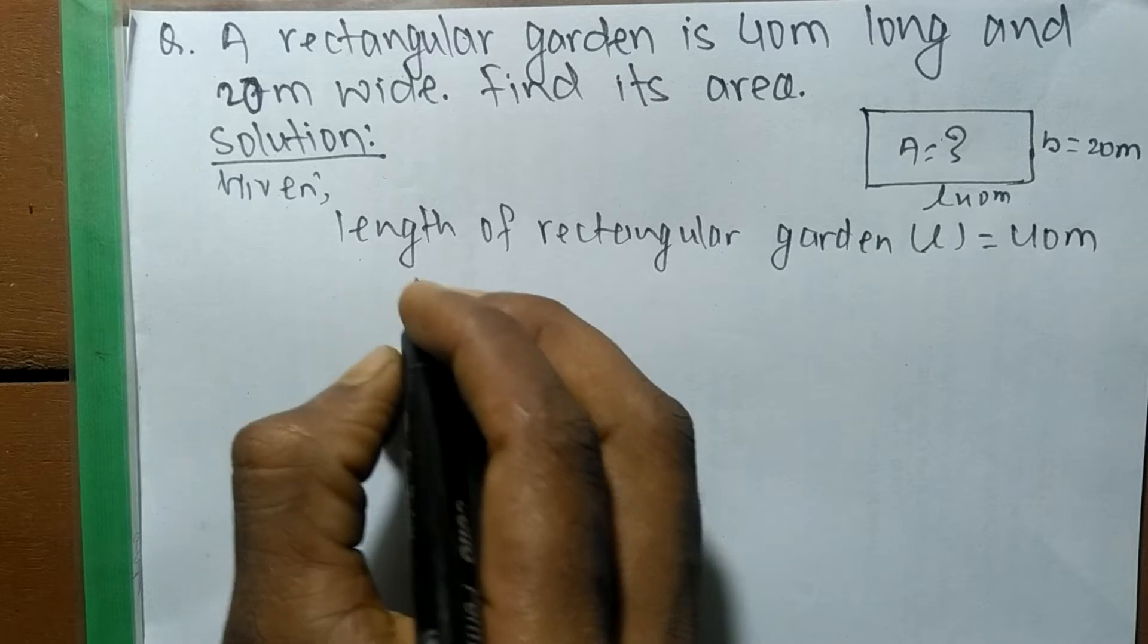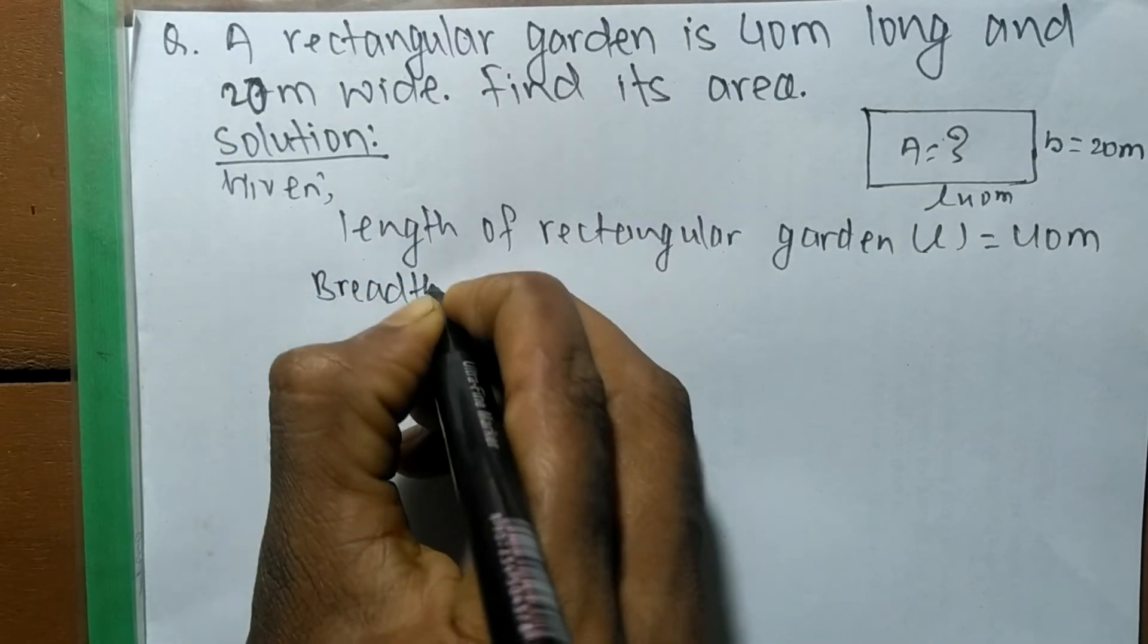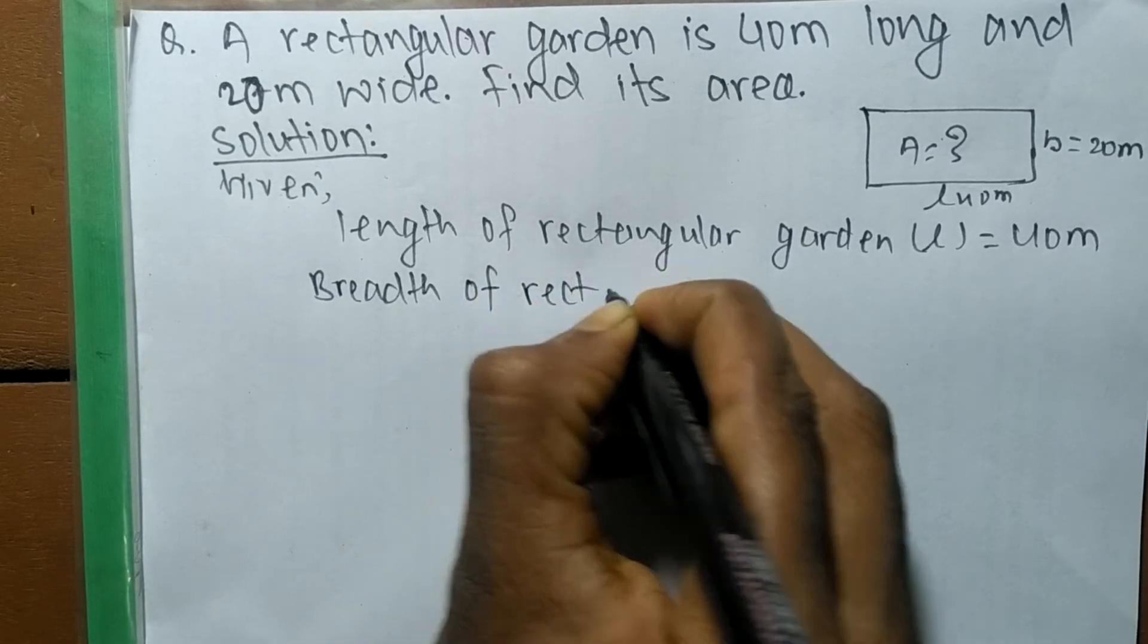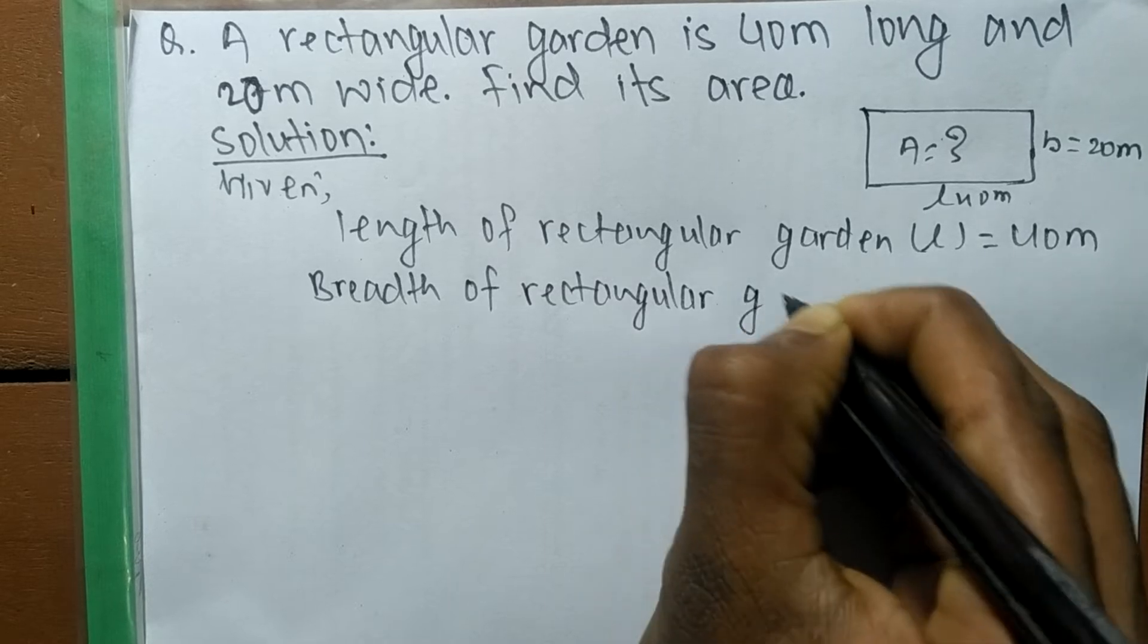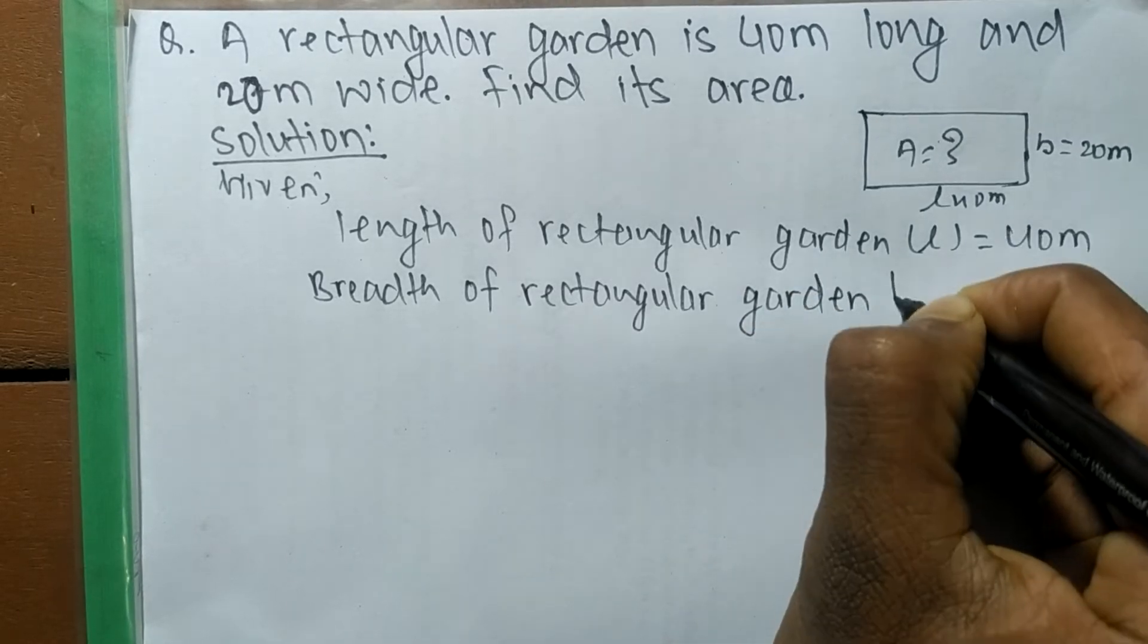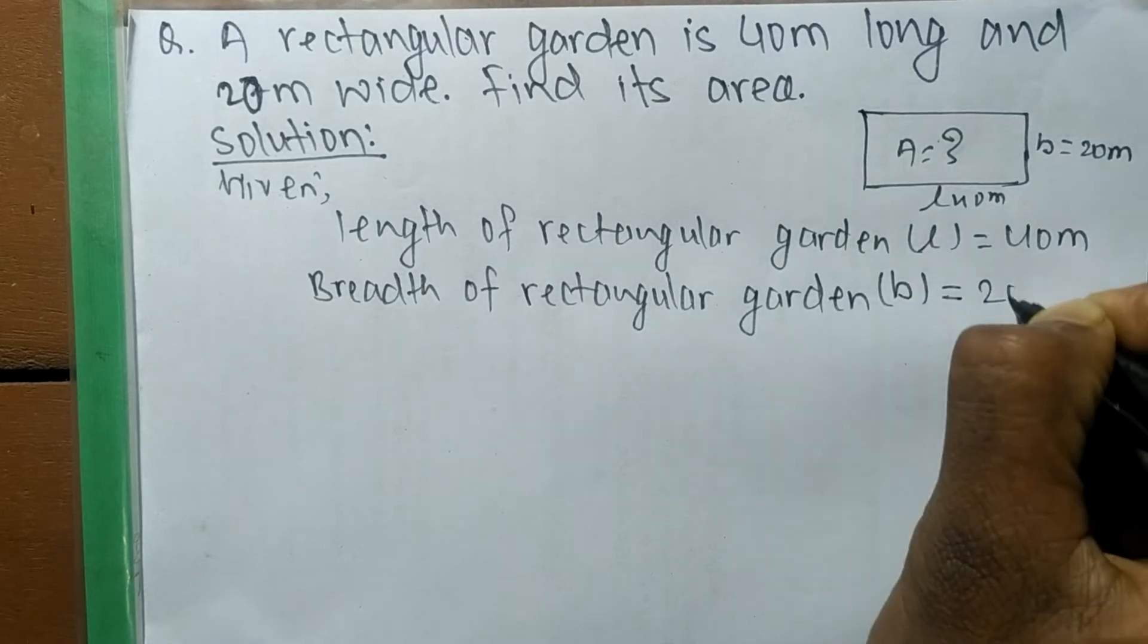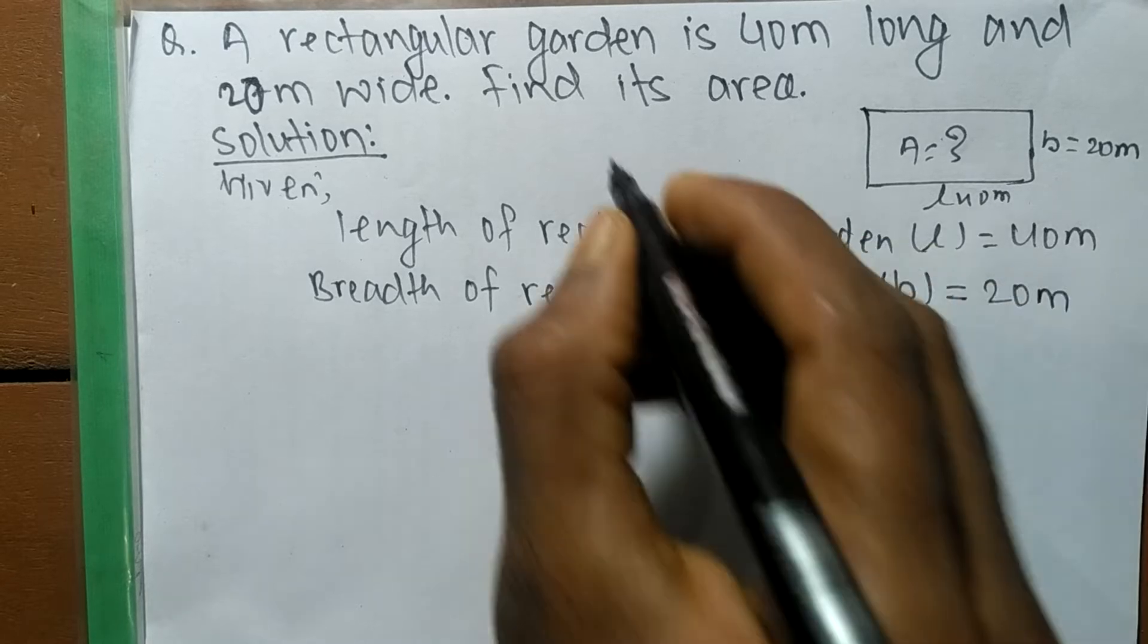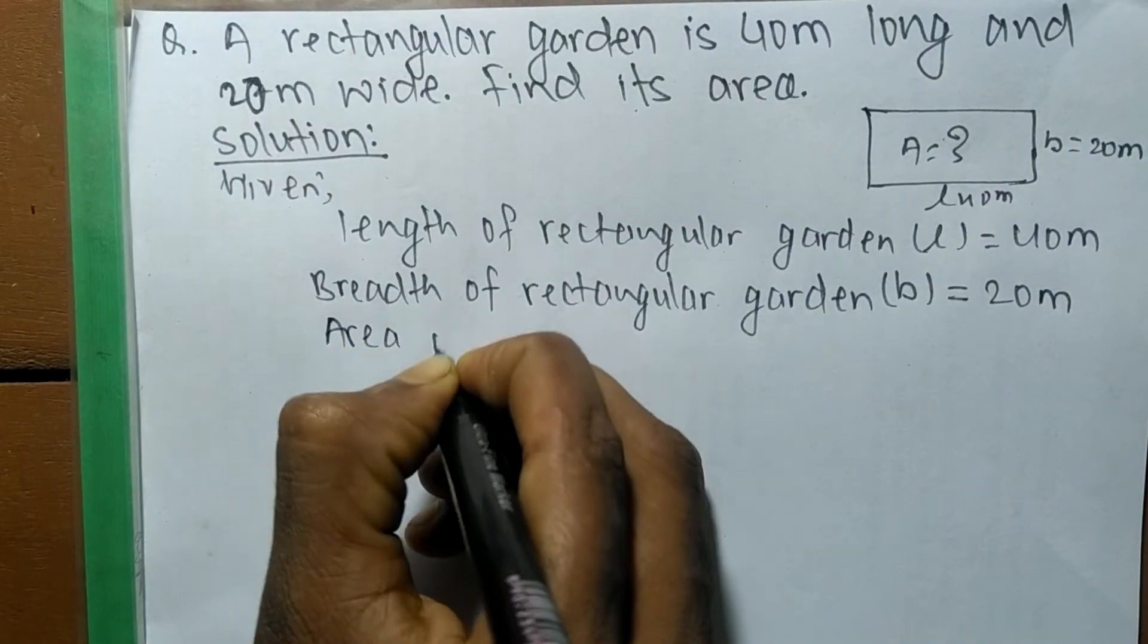Also we have given width, so breadth of a rectangular garden, we denote it by B, so it is equal to 20 meter. And we have to find its area.